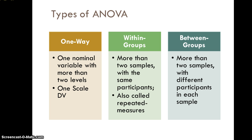There are several types of analysis of variance. The first is called a one-way analysis of variance, or one-way ANOVA, where we have a single nominal variable with more than two levels. In the example given, we're looking at interventions that treat anxiety: a control group (probably wait-listed), a standard treatment, and a new treatment being investigated to see whether it's better than the standard treatment.